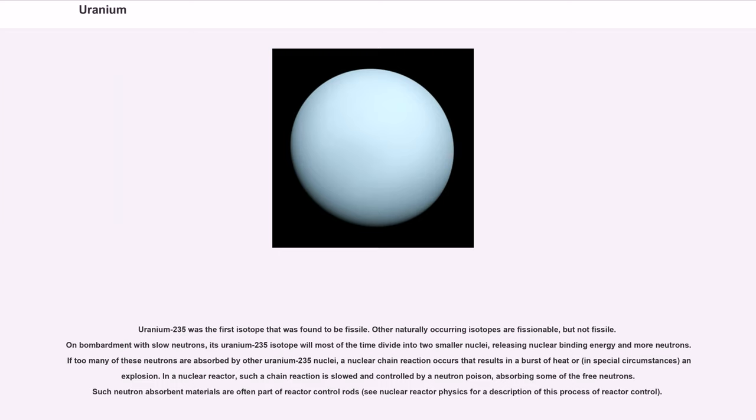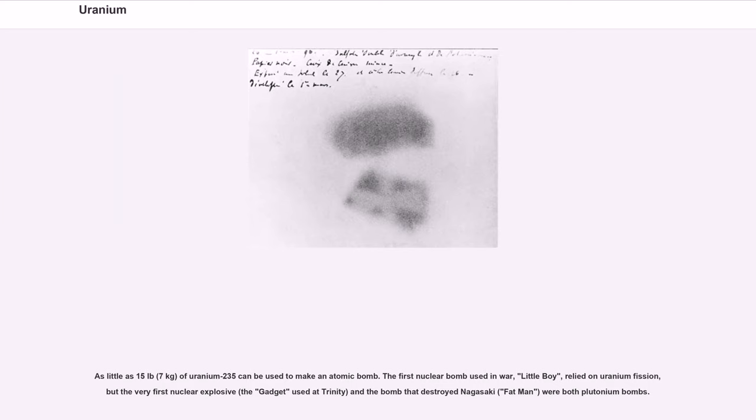In a nuclear reactor, such a chain reaction is slowed and controlled by a neutron poison absorbing some of the free neutrons. Such neutron-absorbent materials are often part of reactor control rods. As little as 15 pounds (7 kilograms) of uranium-235 can be used to make an atomic bomb. The first nuclear bomb used in war, Little Boy, relied on uranium fission, but the very first nuclear explosive, the gadget used at Trinity, and the bomb that destroyed Nagasaki, Fat Man, were both plutonium bombs.